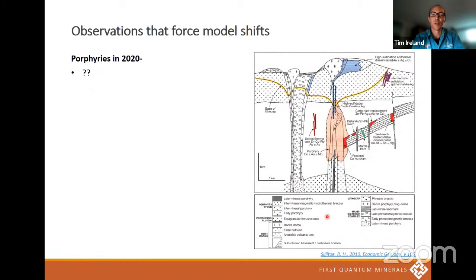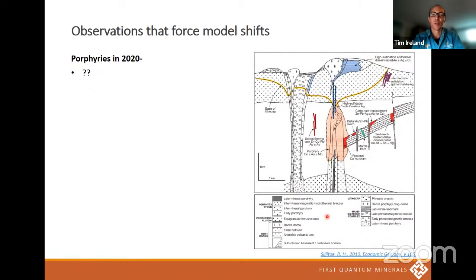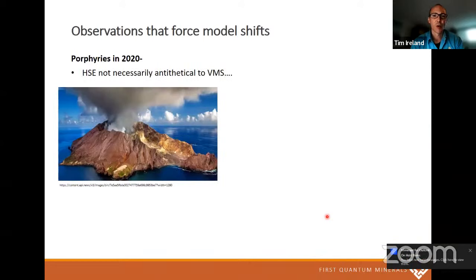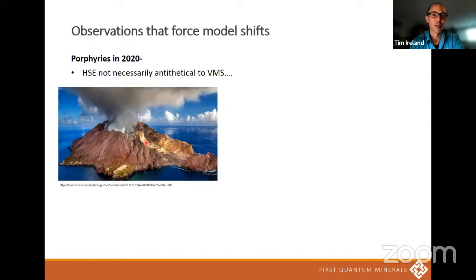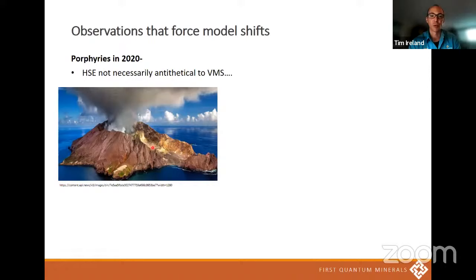So coming right back to porphyries again — observations that force model shifts and where is what's left for the porphyry model, which is arguably the most elegant and best-understood model in the world. Here's a picture of White Island off the coast of northern New Zealand, showing some really beautiful acid-sulfate fumarolic alteration in a degraded volcanic edifice. It's held up as the classic modern example of an active high-sulfidation system. If you do any of the master's courses through UTAS prior to a tourism disaster at White Island a couple of years back, they would take you here to pick up bits of rock that look exactly like they've come out of a high-sulfidation epithermal system.